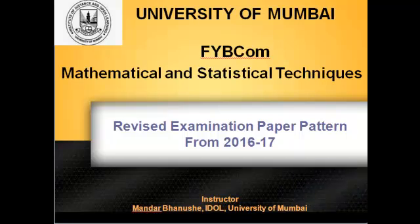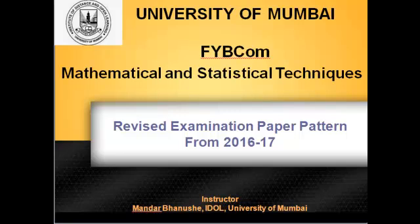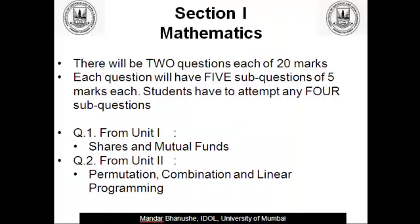Let us see the question paper pattern for Section 1. We will be having a total of 5 questions — 2 questions from Mathematics and 3 questions from Statistics. In Section 1 Mathematics, there will be 2 questions each of 20 marks. Each question will have 5 sub-questions of 5 marks each.